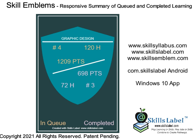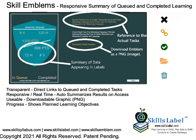As a pitch idea for getting skill syllabuses and skill labels into the classroom, another good reason is skill emblems. You can see what they look like at www.skillsemblem.com. They are a responsive summary of queued and completed learning — like a badge that constantly gets updated in real-time on a skill-by-skill basis.